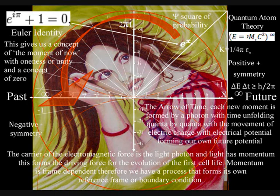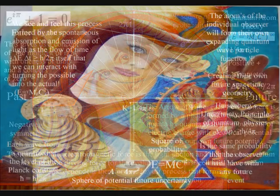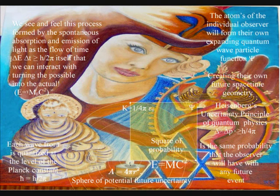It is because life can choose when and where to collapse the quantum wave particle function or probability function, breaking the symmetry, that we have free will.